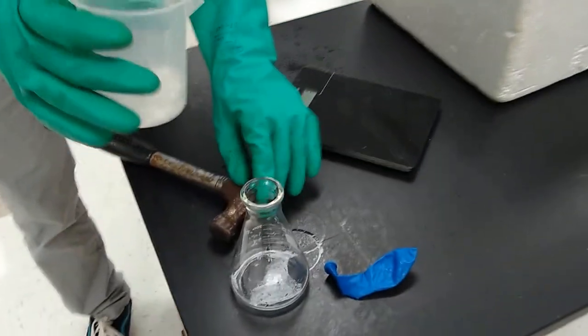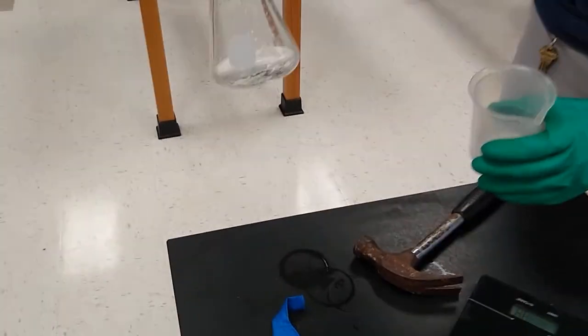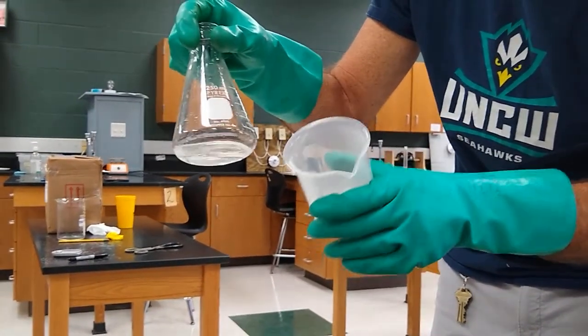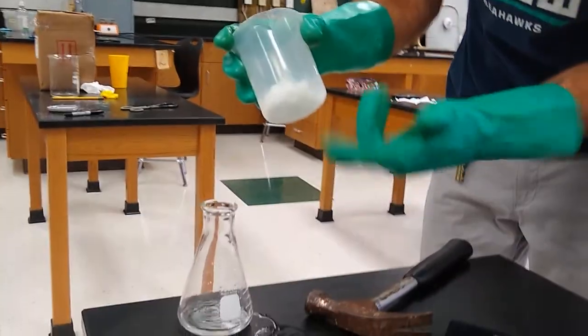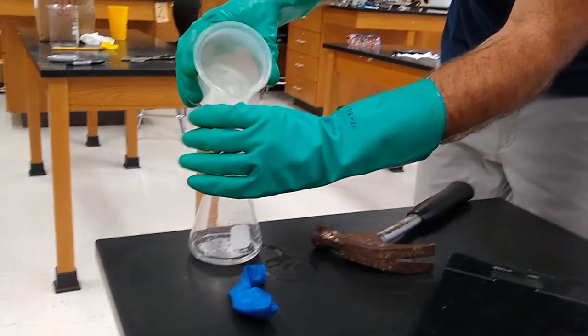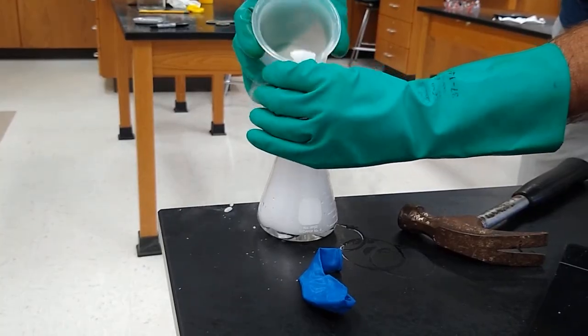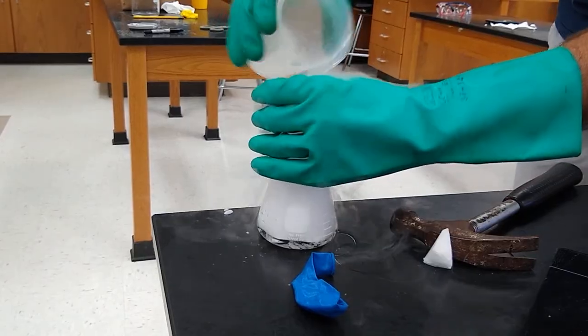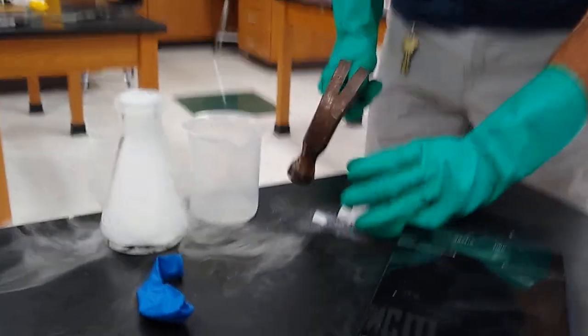Now, we're going to take this dry ice, and we're going to put it into this Erlenmeyer flask. But there's some water in here, and the water is really just going to help us start sublimating this really quick. The water will help the solid turn to a gas a little bit more quickly. So let's see if we can get this down in there. I have to bust that one into a smaller piece. There we go. Get this little guy right here busted. A little better.